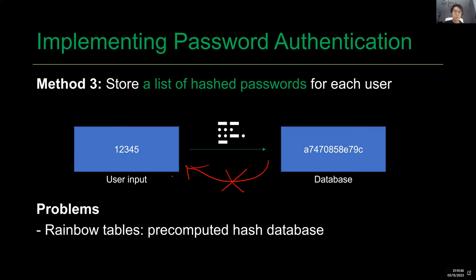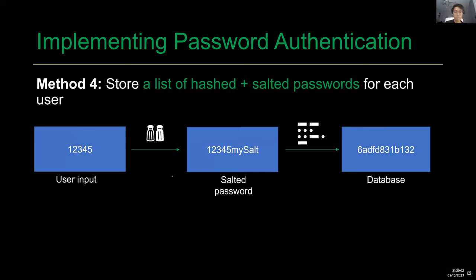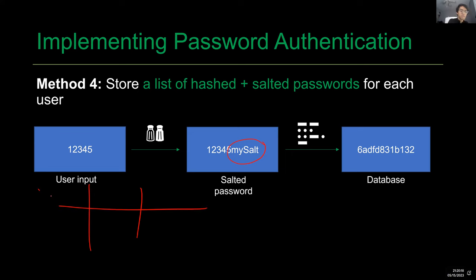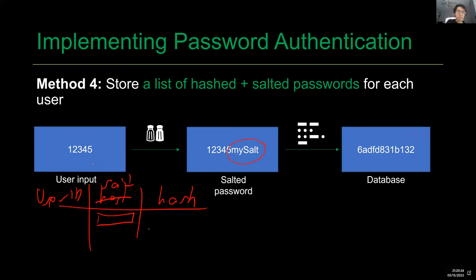If we cannot make the user put in a complicated password, let us make the password more complicated for them by adding a random string of characters to the password known as a salt. The user enters '12345', we add a random salt value and hash the output to store in the database. The database now stores the user ID, the salt, and the hash. When the user logs in, we take their input, append the plaintext salt, hash the output, and compare it with the stored value.